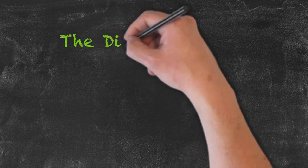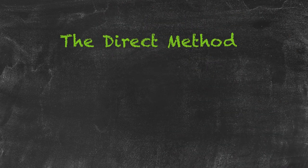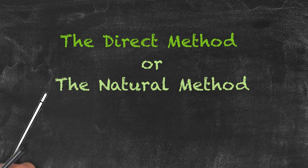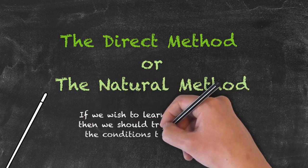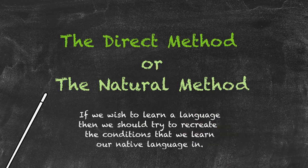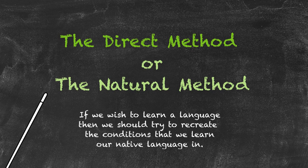The method they came up with was called the direct method — also sometimes called the natural method. What these two people were saying is that if we wish to learn a language, we should try to recreate the conditions in which we learn our native language. This is what the natural methodology tried to do. We're going to run through a series of methodologies created mainly in the 1900s that adopted the idea that language learning should be much more communicative and more natural.